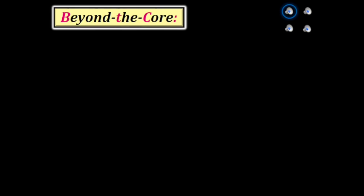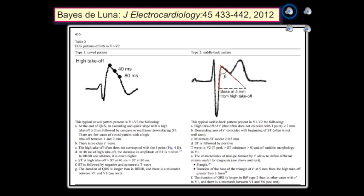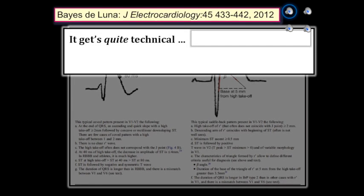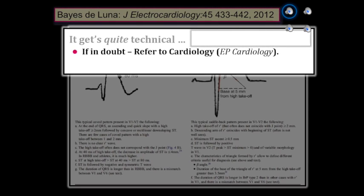This takes us to an excellent and surprisingly easy way to answer these questions. A table published by a group of esteemed international cardiologists in the Journal of Electrocardiology summarizes the criteria — though the details get quite technical. The good news is that a picture tells a thousand words, and I'll simplify the contents over the next few minutes. Let me emphasize: if ever you are in doubt about what to do for a patient with a possible Brugada ECG pattern, refer the case to one of your cardiology colleagues.